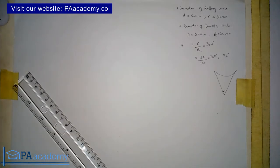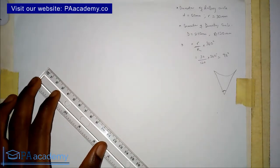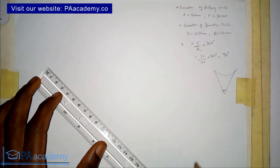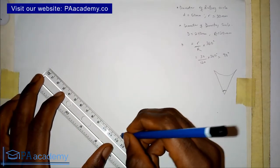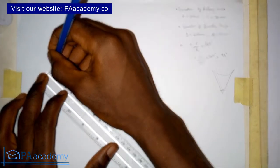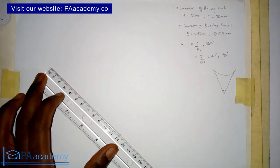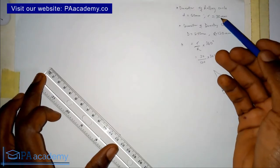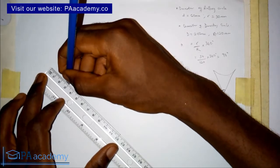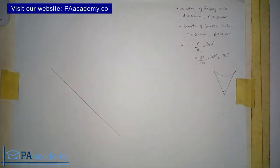First, we are going to draw a line equal to the radius of the directing circle, which is 120 mm. On this same line from the top, I'm also going to mark 30 mm. That is the 30 mm — same as 3 cm.